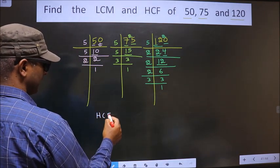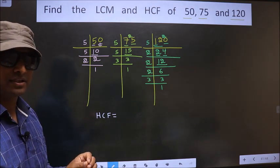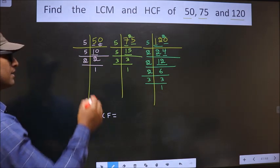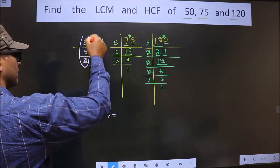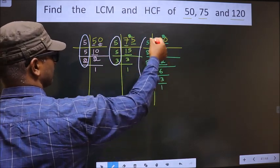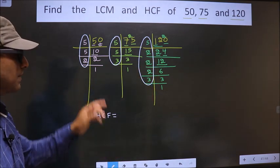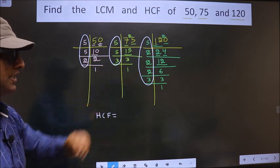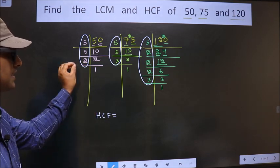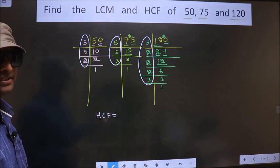So now our HCF is. HCF is the product of numbers, of those numbers which should be present here, and here, and also here. So now we should find the numbers that should be present in these 3 places. Let us start.